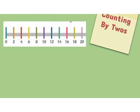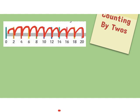Let's look at counting by twos. On a number line, if we count by twos, we go from zero to two, four, six, eight, ten, twelve, fourteen, sixteen, eighteen, and twenty. So every time I'm moving on the number line, I'm adding two. I can use counting by twos to figure out if a number is even or odd.